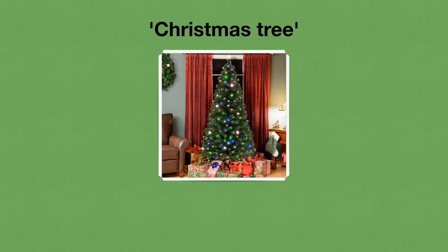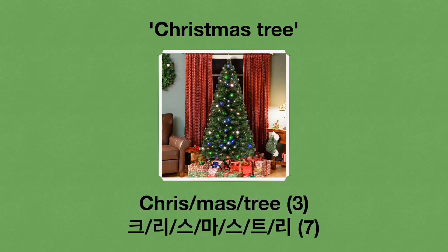This characteristic is really visible in the word 'Christmas tree.' In English, 'Christmas tree' has three syllables: Chris, mas, and tree. But because Koreans can't pronounce sounds like 크, 스, and 트 without vowels, the Korean version of 'Christmas tree' is 크리스마스 트리. You can see that there are four more syllables in Korean. That's why there's such a big difference: 'Christmas tree' versus 크리스마스 트리.